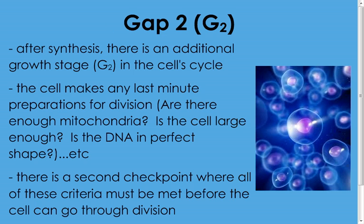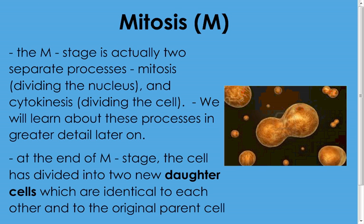Gap 2 is the final preparation stage right before the cell divides. Once the criteria for G2 have been met, we go on to Mitosis. Mitosis refers to the process of dividing the nucleus into two equal parts, making sure each new nucleus has a full set of DNA and instructions. Also included with mitosis is a process called cytokinesis — a separate process where the cell itself is divided, the cytoplasm is separated into two equal portions, and the organelles are divided up.